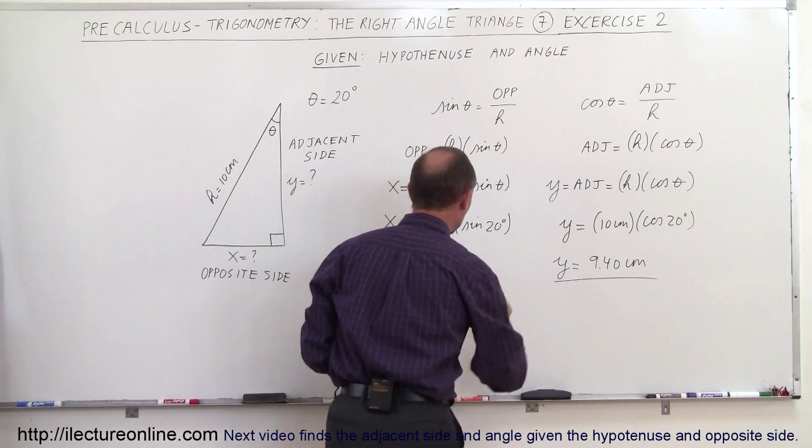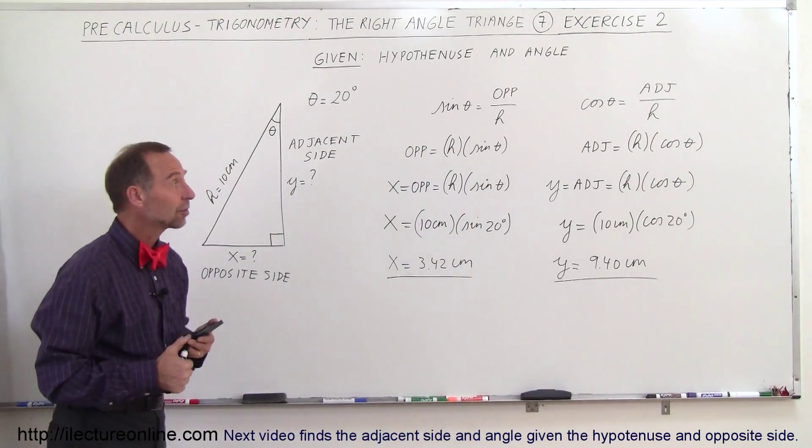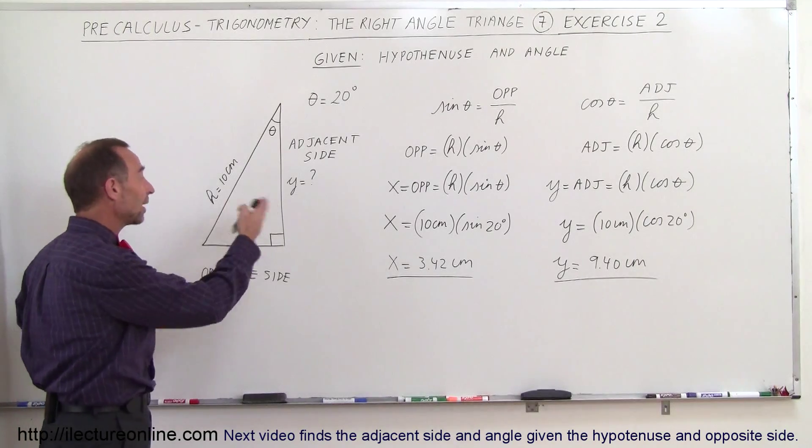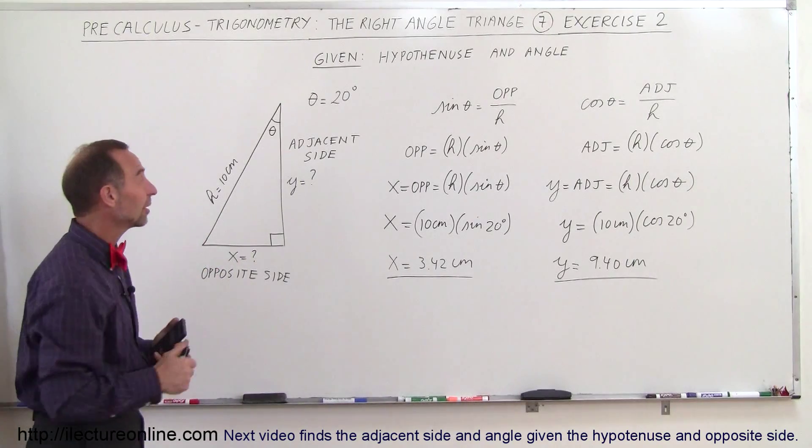And that's how we find the two unknown sides. Again, I always caution you, don't just automatically think that x deals with the cosine and y deals with the sine. It all depends how the problem is set up.